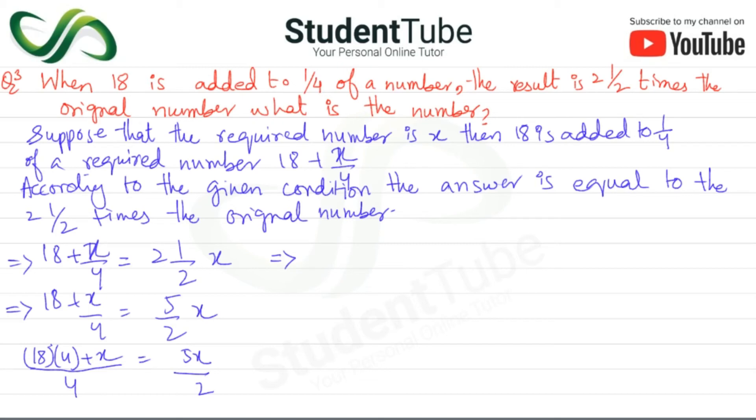...is equal to 5x upon 2. Now cross multiplication will be 2(72 plus x) is equal to 4 multiplied by 5x.